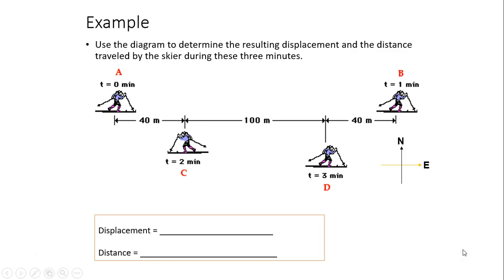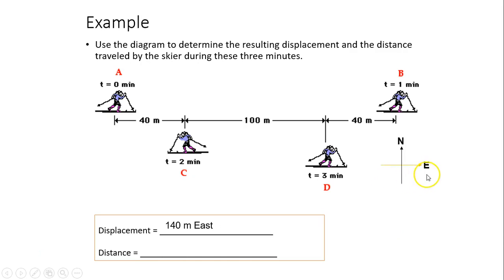Another example: use the diagram to determine the resulting displacement and the distance traveled by the skier during three minutes. The skier starts from A, comes to B, then C, and finally D. The total displacement is 140 meters east according to compass rules. The distance — total ground covered — is 40 + 100 + 40 + 140 + 100 = 420 meters.